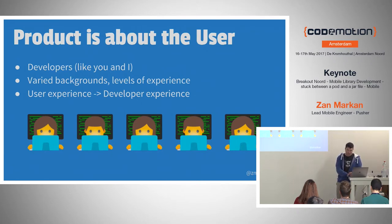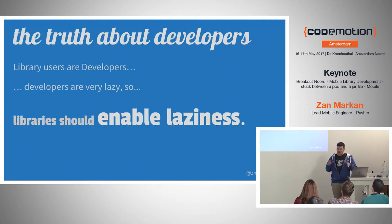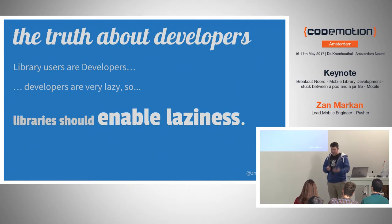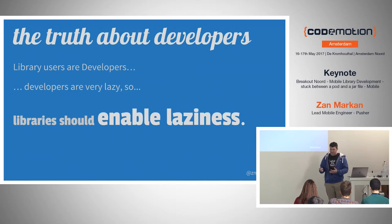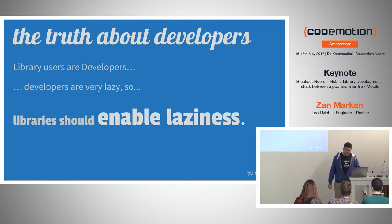There's one additional fact about developers: we don't like to do too many things, we like to automate things, and we don't like to repeat ourselves — because we're lazy. The objective of libraries should be that they enable that. If something is not going to save me time, money, or effort, I'm not going to use it — simple as that. That was all about libraries in general; now I'm going to move on to more practical things.